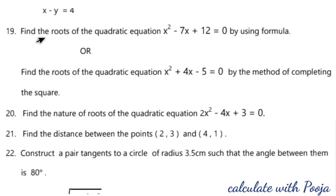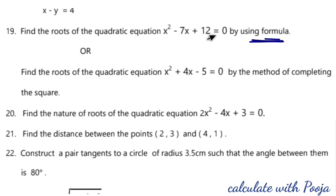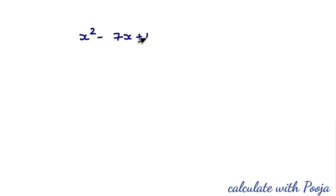Next, question 19: find the roots of the quadratic equation x² − 7x + 12 = 0 by using the formula method. Since they have specified the formula method, we apply it — otherwise we could use factorization or completing the square.